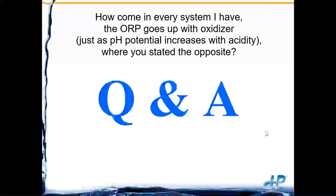Question: how come in every stream the ORP goes up with oxidizers, opposite to what was stated? This is where it gets confusing — the terms do sound backwards. The oxidizing agent causes a reduction, and I want to verify my chart didn't have it backwards. The oxidizing agent causing a reduction should be a positive value, not a negative value. I want to dig into that more to make sure what I stated was correct.